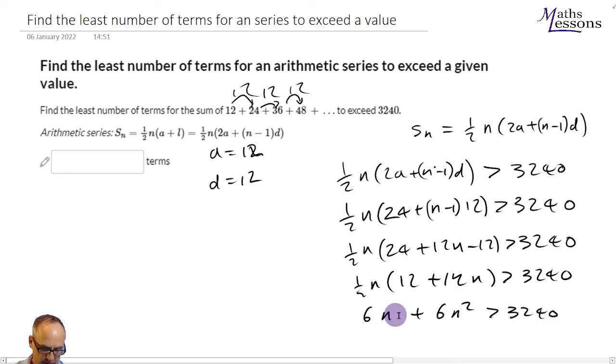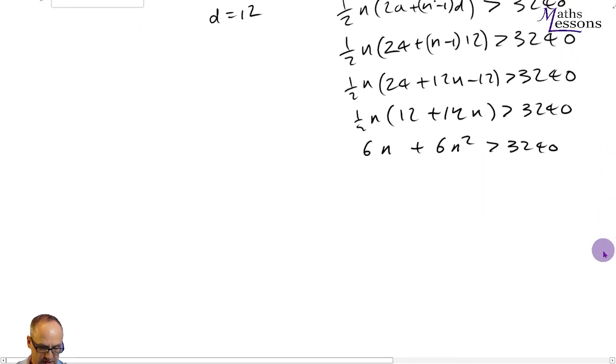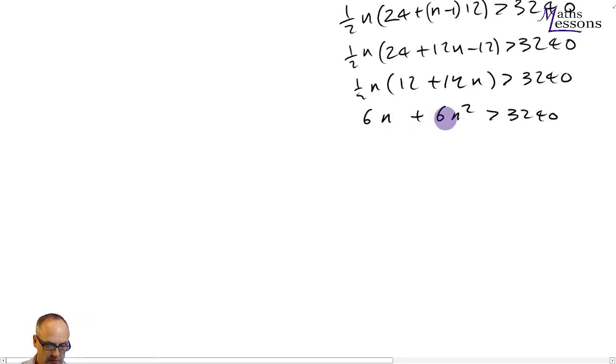And we want to know when that's greater than 3,240. Now we've got a quadratic here. What we do with a quadratic is we get it all onto the same side. So we've got 6n squared plus 6n minus 3,240 must be greater than zero. Now to make our numbers easier, we can see that 6 goes into every single value. And if we divide every value by 6, we get n squared plus n minus 540.